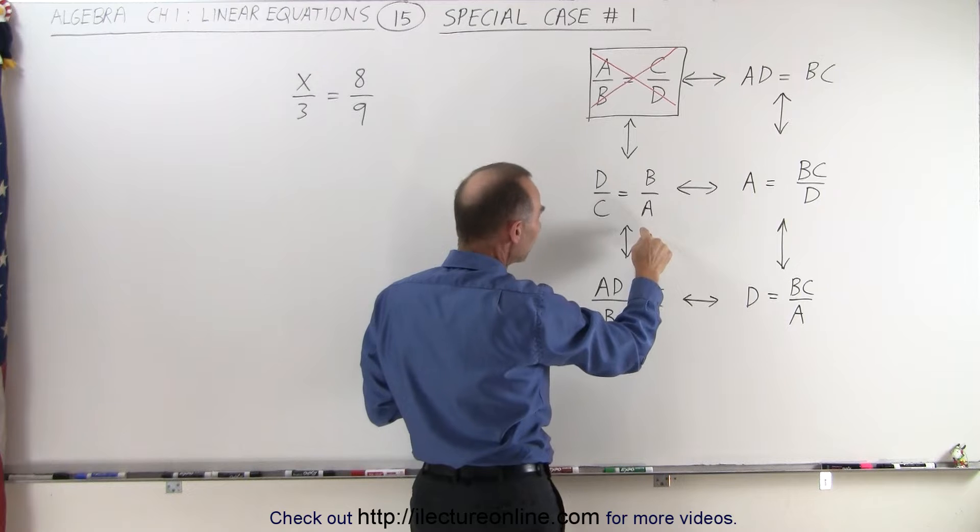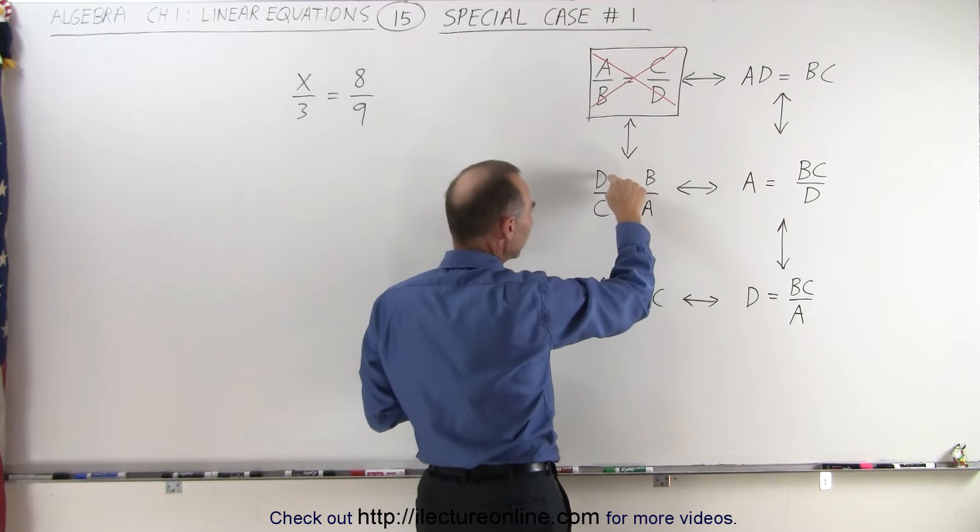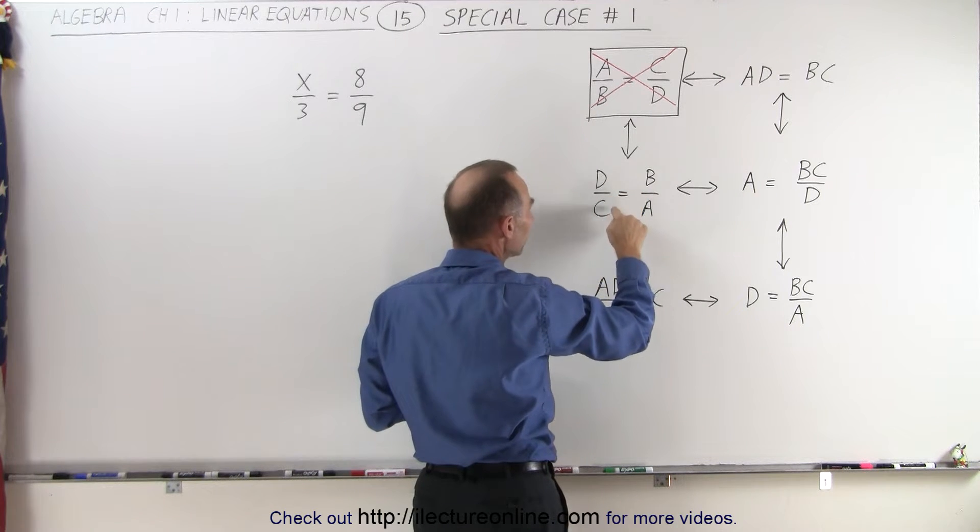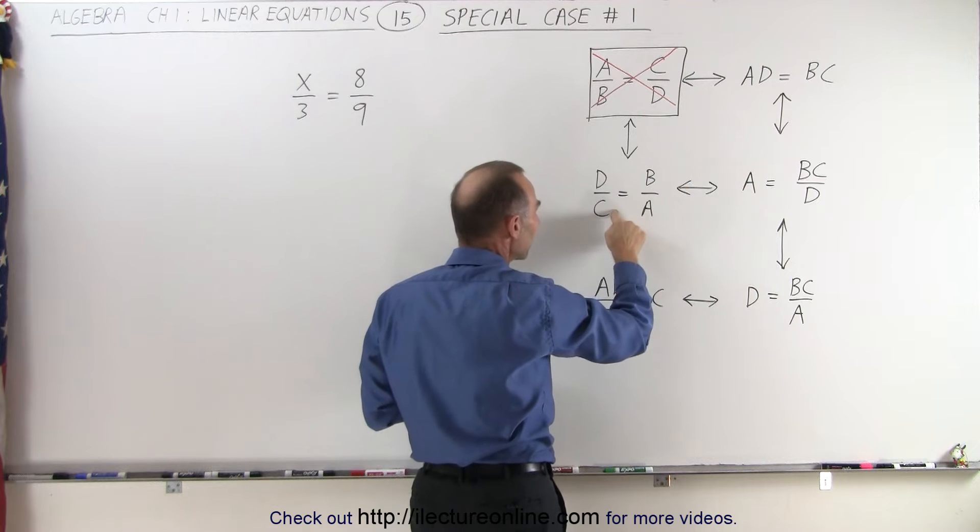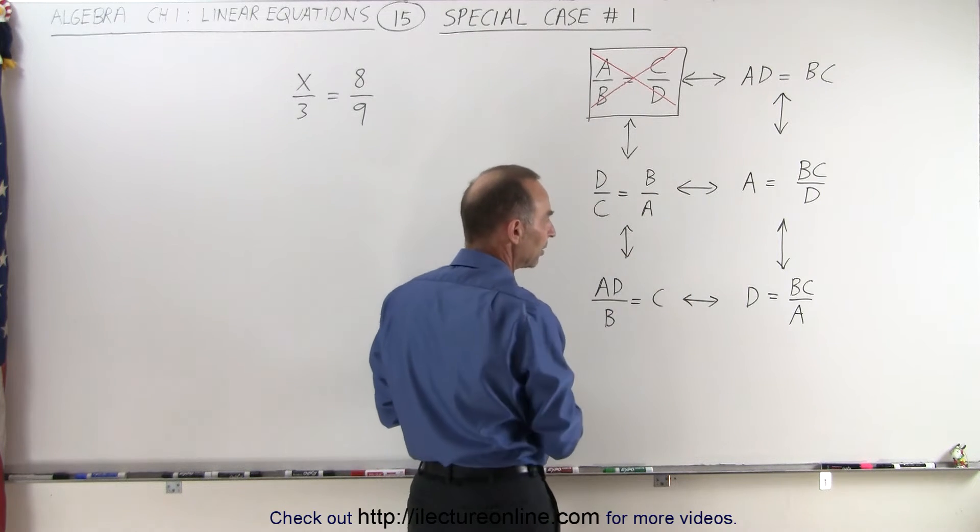Or, in this case, I can move the A up here, I can move the C up here and the B down here, I get AD over B equals C, just like what I have over here.